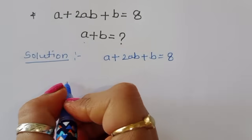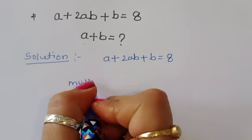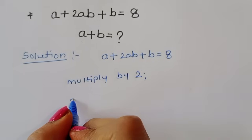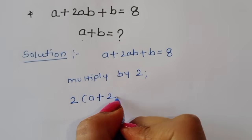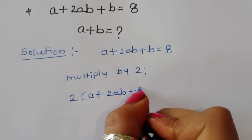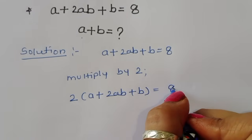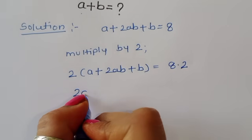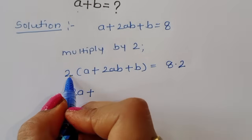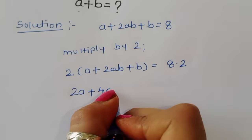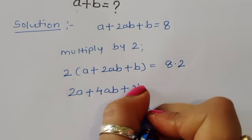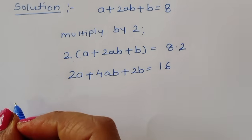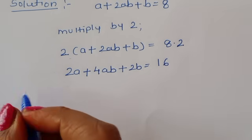We can multiply both sides by 2. Then we get 2 times (a + 2ab + b) = 8 times 2, which gives us 2a + 4ab + 2b = 16. Now we can take common here.